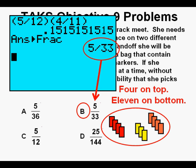One thing to look for in these types of problems is that the correct answer has always been one of the two smallest numbers, because multiplying events always reduces probabilities more than the average person thinks they should.